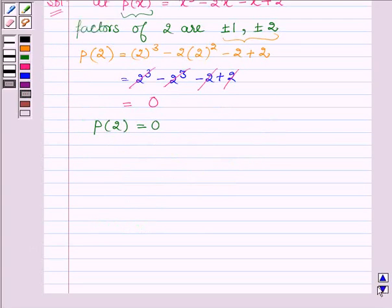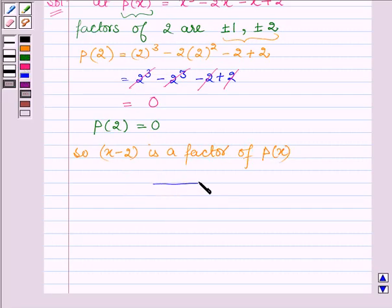Therefore x minus 2 is a factor of p(x), and on dividing p(x) by x minus 2 we will have the remainder as 0. Let us divide p(x), which is x cubed minus 2x squared minus x plus 2, by x minus 2.